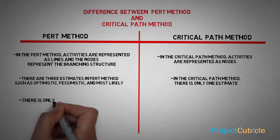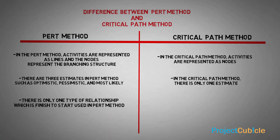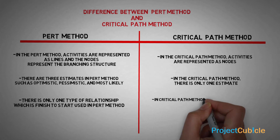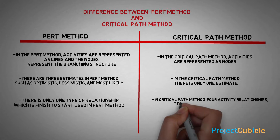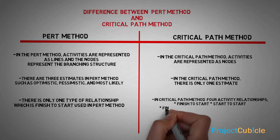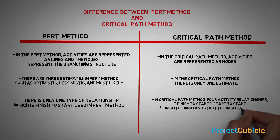Third: there is only one type of relationship used in the PERT method, which is finish-to-start. However, in the critical path method, multiple activity relationships can be used: finish-to-start, start-to-start, finish-to-finish, and start-to-finish.